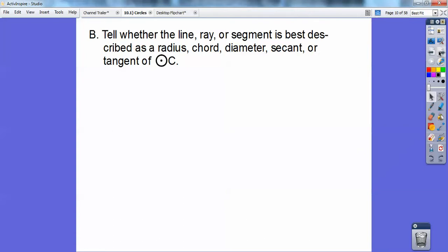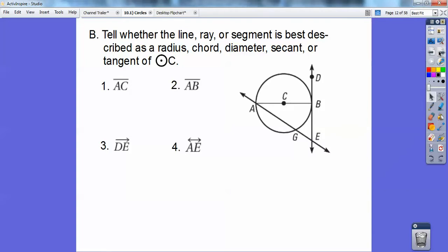So tell whether the line, the ray, or the segment is best described as a radius, a chord, a diameter, secant, or a tangent of the circle. So there's the picture right there, and there's 1, 2, 3, and 4. So AC is a radius. AB is a diameter, segment AB. This is ray DE, so starts at D and goes through E past it. So that one is called a tangent ray. And AE is a definite secant right there.